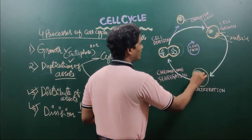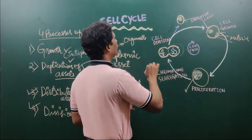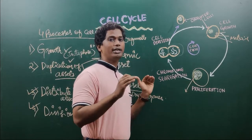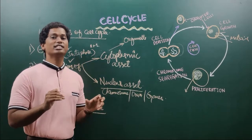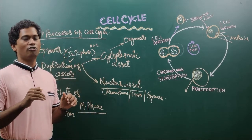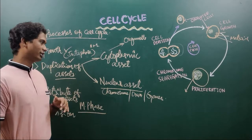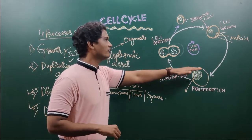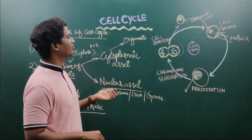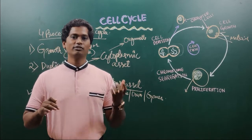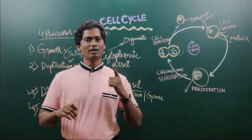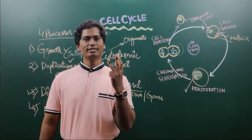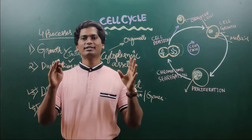This is all about the cell cycle. One more important event and the phases of the cell cycle will be discussed in the next part of this video lecture. There I will discuss the four phases: G1 phase, S phase, G2 phase, and last is M phase. These are the phases of the cell cycle.